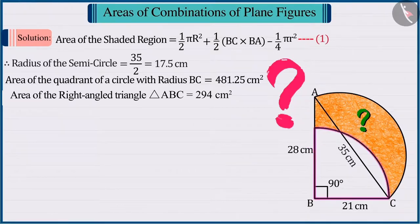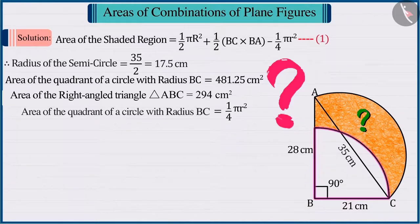So, now can you tell, what will be the area of the quadrant of a circle with radius BC?